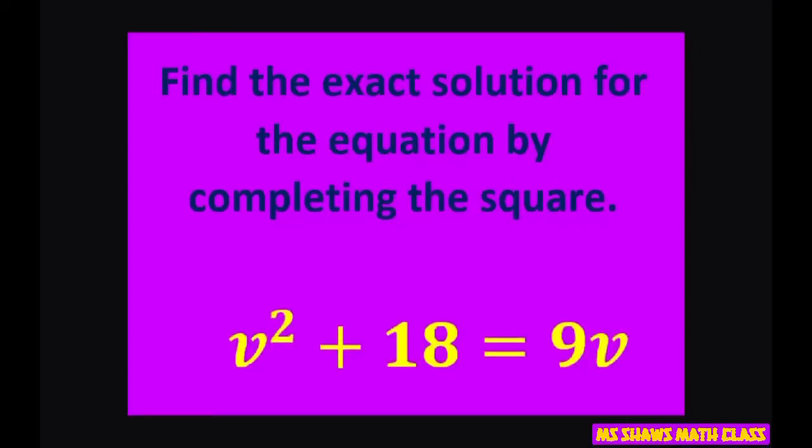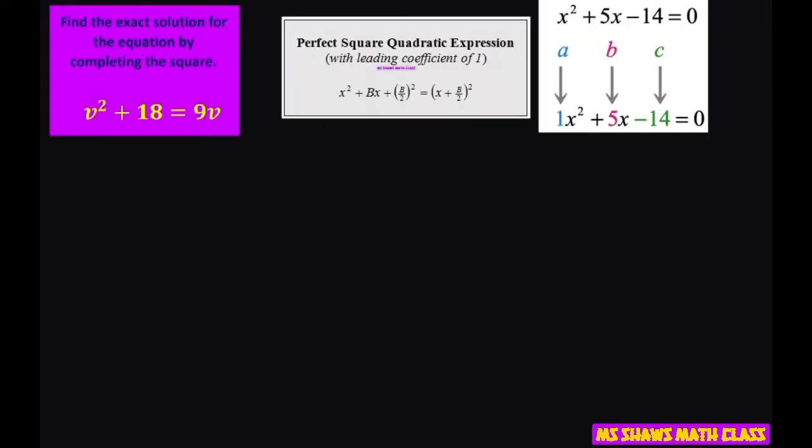Hi everyone, we're going to find the exact solution for the equation by completing the square. The first thing we're going to do with this equation is rewrite it. Let's put it in standard form. We want it to look like this. So we have v squared, subtract this 9v from both sides.